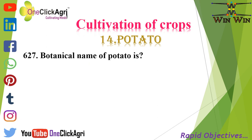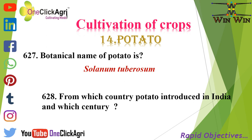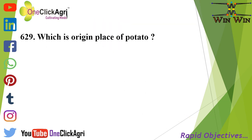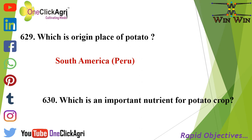Next crop: the botanical name of potato is Solanum tuberosum. Potato was introduced in India from Europe in the 17th century. The origin place of potato is South America, specifically Peru. An important nutrient for potato crop is nitrogen.